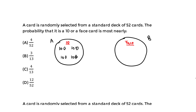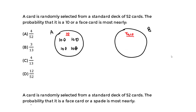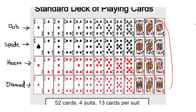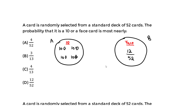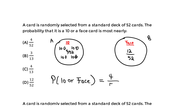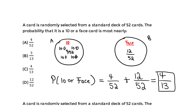So we have 4 tens out of 52. For the face cards, that gives us 12 out of 52, since jack, queen, and king across all 4 suits gives 12 face cards. The tens are disjoint from the face cards, so it's 4 out of 52 for tens. The total probability of getting either a 10 or a face card equals 4/52 plus 12/52, which gives us 4 out of 13.